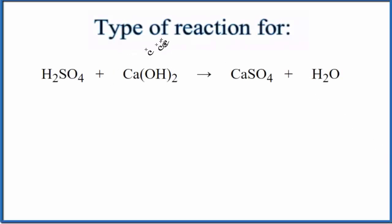In this video, we'll take a look at the type of reaction for H2SO4 plus Ca(OH)2. This is sulfuric acid and this is calcium hydroxide.